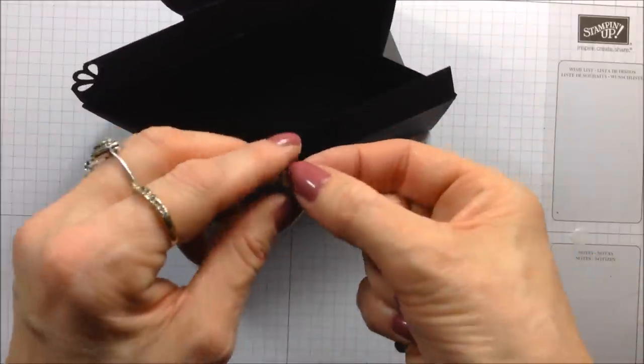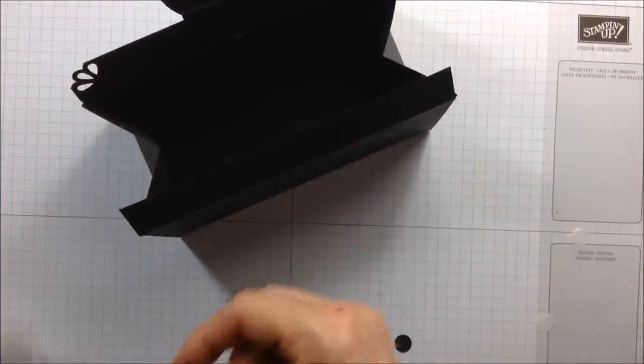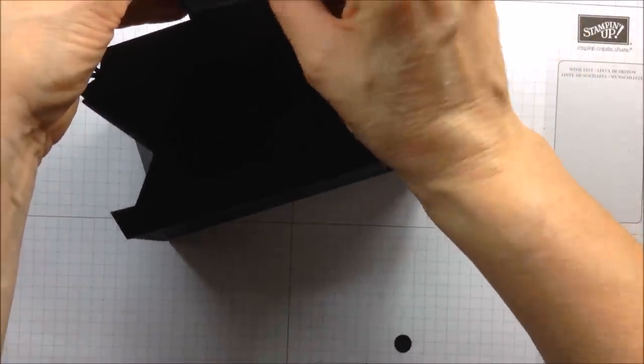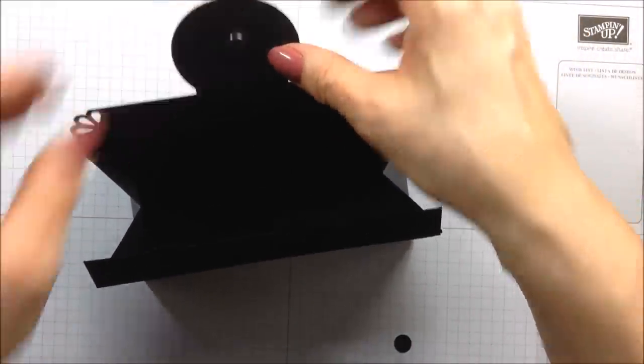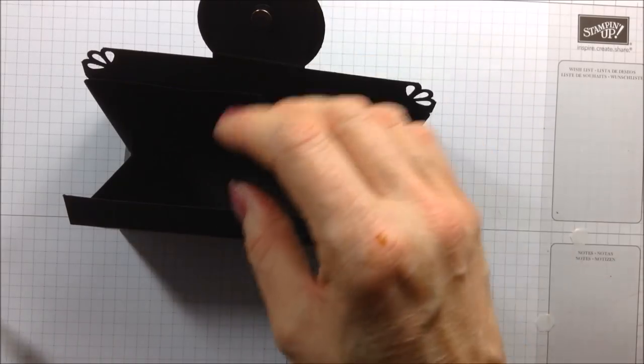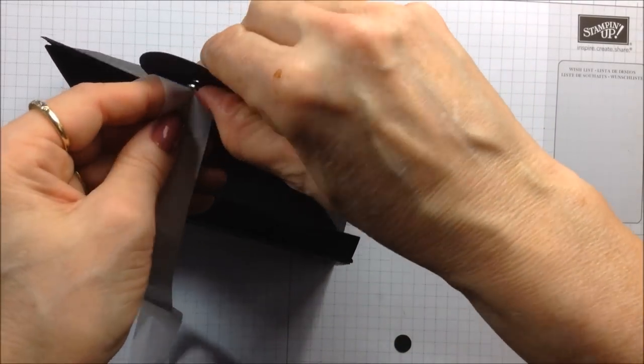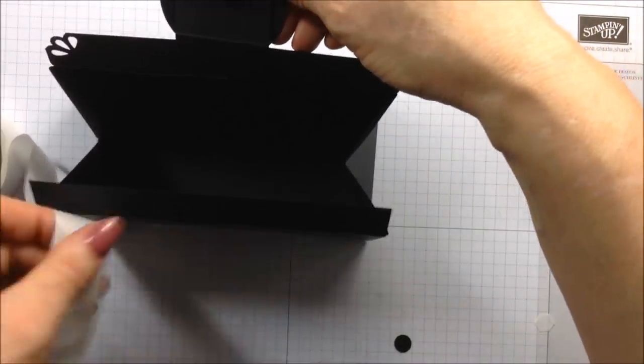I'm going to take my other magnet and I'm just going to stick that on there like that. Then I'm going to take a glue dot and pop it on the back. So you've now got like a little sandwich here.